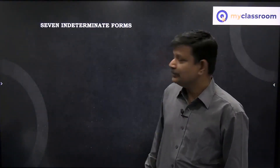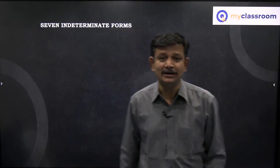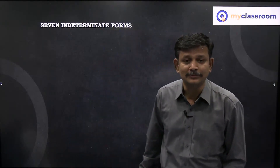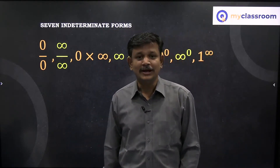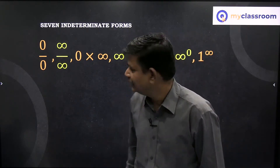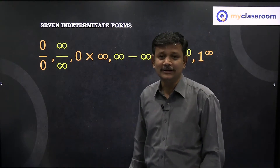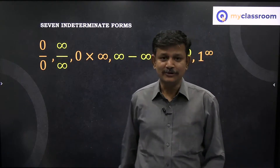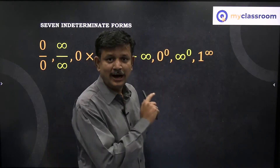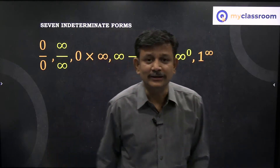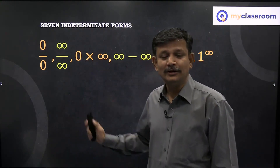What are the indeterminate forms? All your textbooks say there are seven indeterminate forms: 0 by 0, infinity by infinity, 0 into infinity, infinity minus infinity, 0 power 0, infinity power 0, and 1 power infinity. These are the seven indeterminate forms given in all the textbooks.